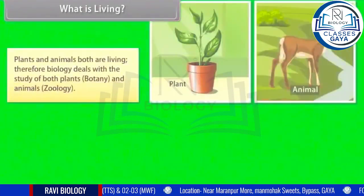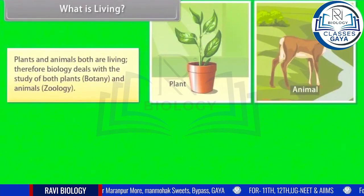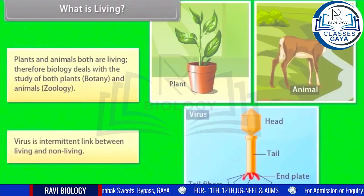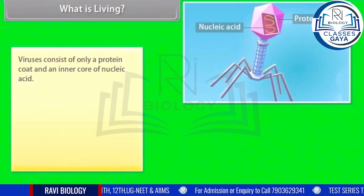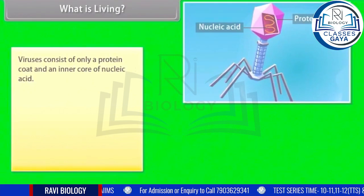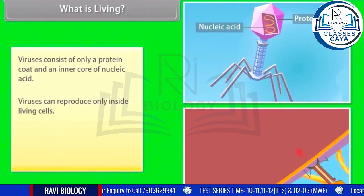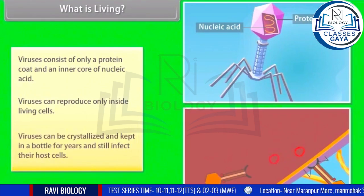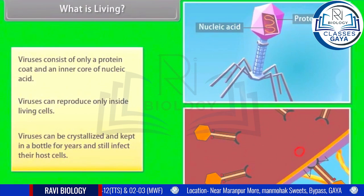Plants and animals both are living; therefore, biology deals with the study of both plants (botany) and animals (zoology). Viruses are an intermittent link between living and non-living. Viruses consist of only a protein coat and an inner core of nucleic acid. Viruses can reproduce only inside living cells, but they can also be crystallized and kept in a bottle for years and still infect their host cells.